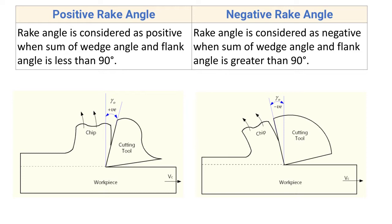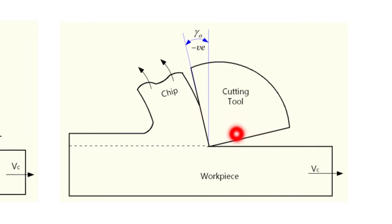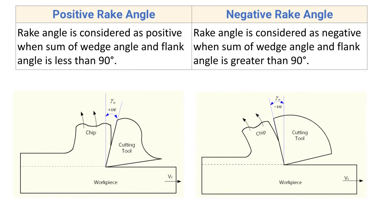Now for negative rake angle: the rake angle is considered as negative when the sum of wedge angle and flank angle is greater than 90 degrees. Here you can see an example of negative rake angle, where the sum of the flank angle and the wedge angle is greater than 90 degrees, making the rake angle negative.